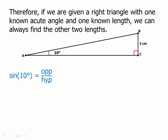Well, certainly, we know that the sine of 10 degrees is opposite over hypotenuse. So that would be 3 over side AB. Now, if we multiply both sides by AB, we get AB times sine 10 equals 3.